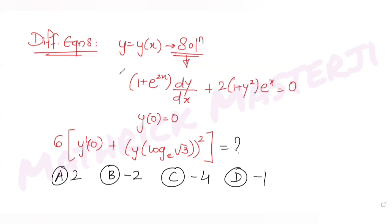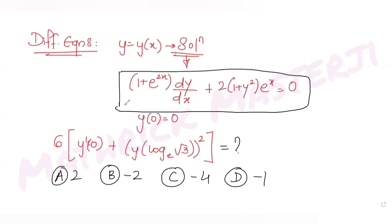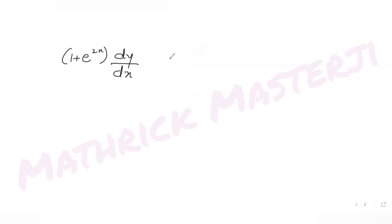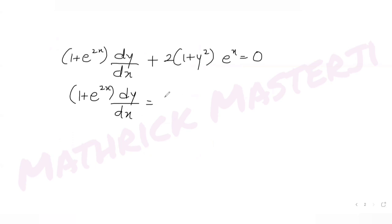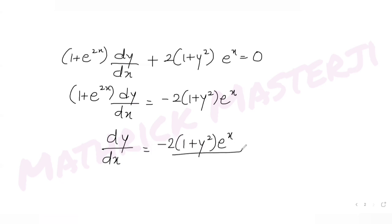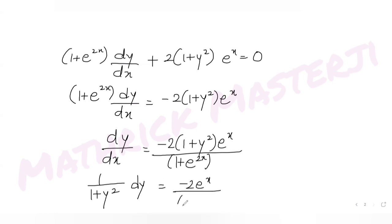To solve this, I start with the differential equation: (1 + e^(2x)) dy/dx + 2(1 + y²)e^x = 0. Rearranging: dy/dx = -2(1 + y²)e^x / (1 + e^(2x)). Separating variables gives: 1/(1 + y²) dy = -2e^x/(1 + e^(2x)) dx.